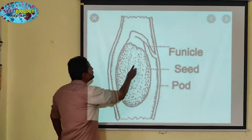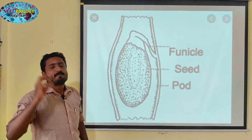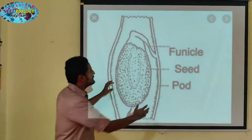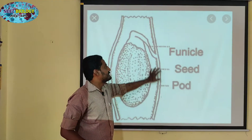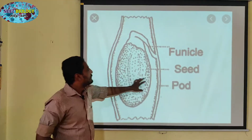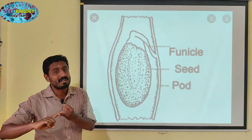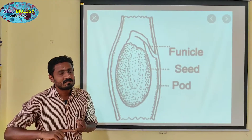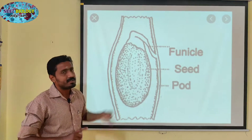This is the fruit wall. The fruit wall — the seed, this is fruit wall. This is seed. Fruit wall is a type of ovary wall. This seed is a result of fertilization.